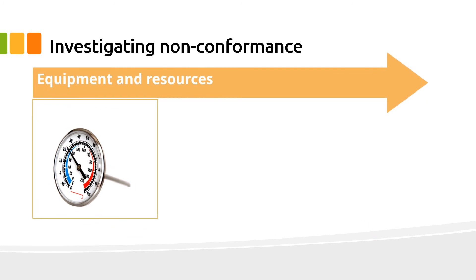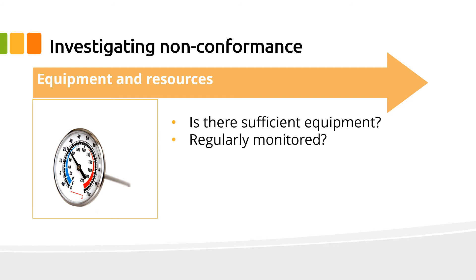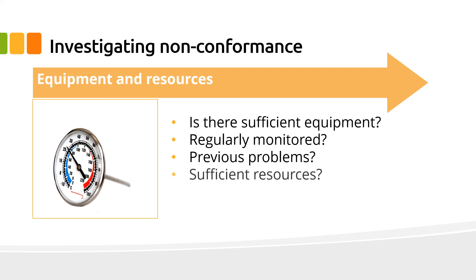When looking at your equipment and resources, ask: is there sufficient equipment to carry out the monitoring? Has the thermostatically controlled equipment, for example the fridges or the ovens, been regularly monitored? Have there been previous problems with the equipment? Are there sufficient resources available to apply the food handling procedures, for example single-use gloves?